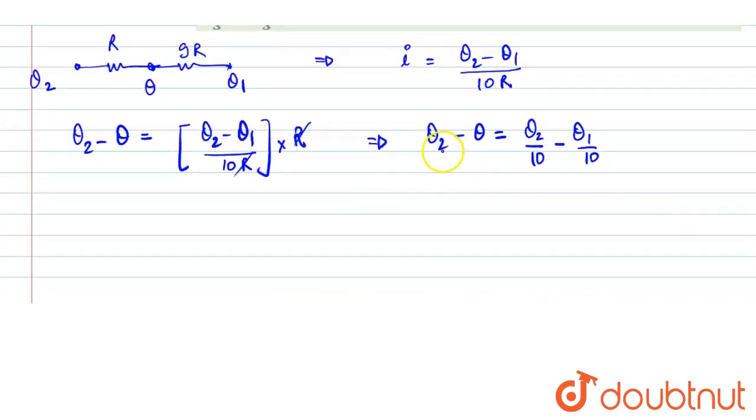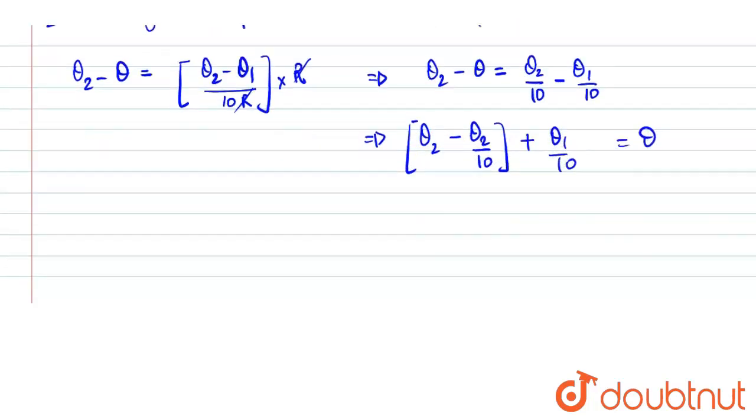Now from here we have to find the value of theta. That becomes theta2 minus theta2 by 10 plus theta1 by 10. This is the value of theta.